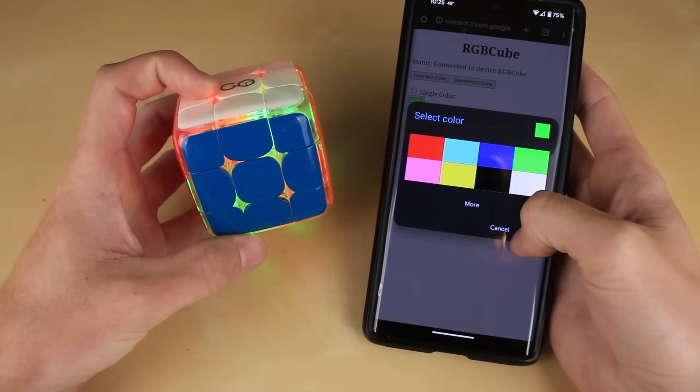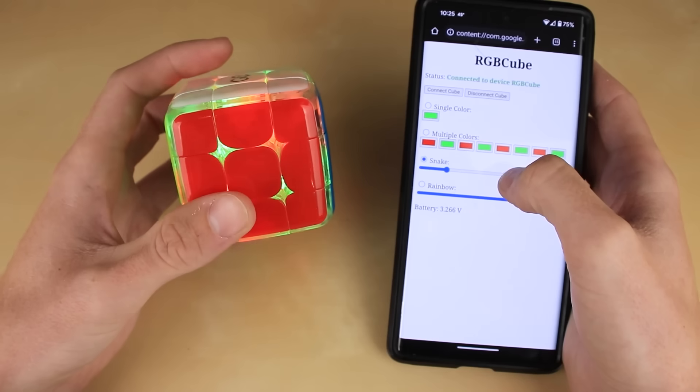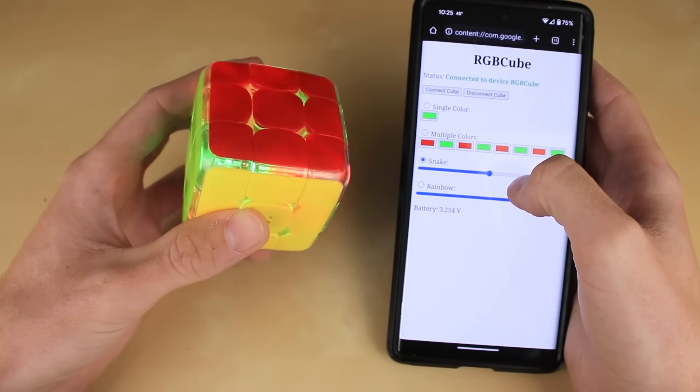So needless to say, you can get very creative with just these four options. There we go. We have a Christmas mode right here. Make it a little bit faster. Oh yeah, beautiful.